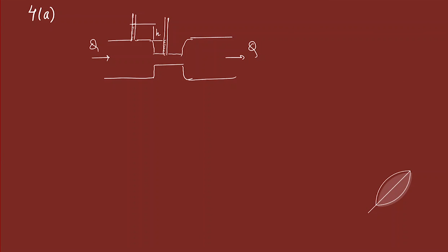We are given a diagram in which the larger tube has area a1 and the smaller one has area a2. The velocity in the larger section is v1 and in the smaller section is v2. The pressure on one side is p1 and on the other side is p2.